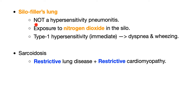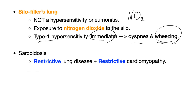Here's another disease that's not a hypersensitivity pneumonitis: silo filler's lung. It's caused by exposure to nitrogen dioxide in the silo. This triggers a type 1 hypersensitivity (immediate type) reaction, leading to dyspnea and wheezing. Because it is type 1 hypersensitivity, it is not a hypersensitivity pneumonitis — recall that hypersensitivity pneumonitis is not type 1, has no IgE, and no eosinophilia.